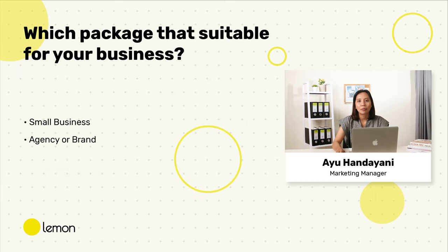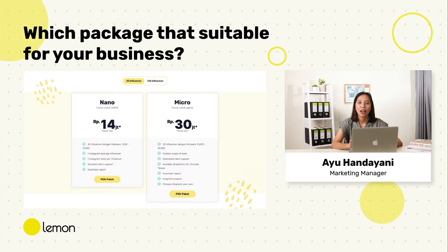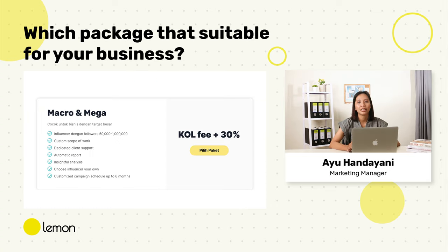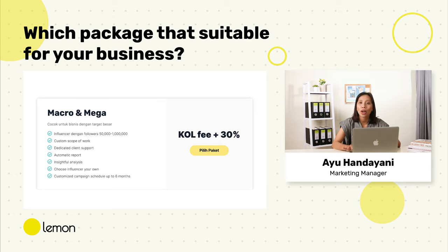Finally, the last question: which package is suitable for you? It actually depends on your business. If you are a small business, you can start by using Nano Influencers — start with 30 influencers, and your campaign will be ready within 2 weeks after you send payment. If you are an agency or brand that needs a more dynamic campaign, you can start by using Micro Influencers or Mega Influencers. You will save hours, days, and even weeks compared to contacting influencers one by one.